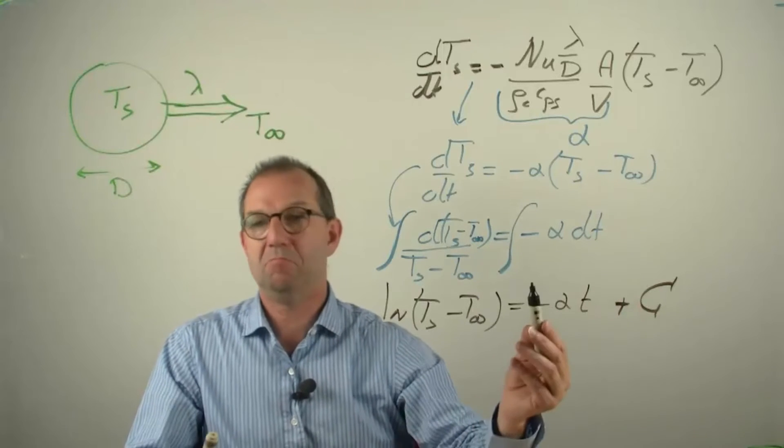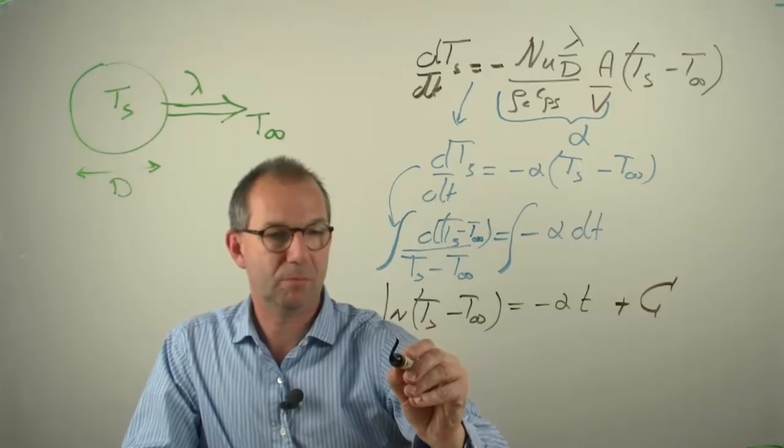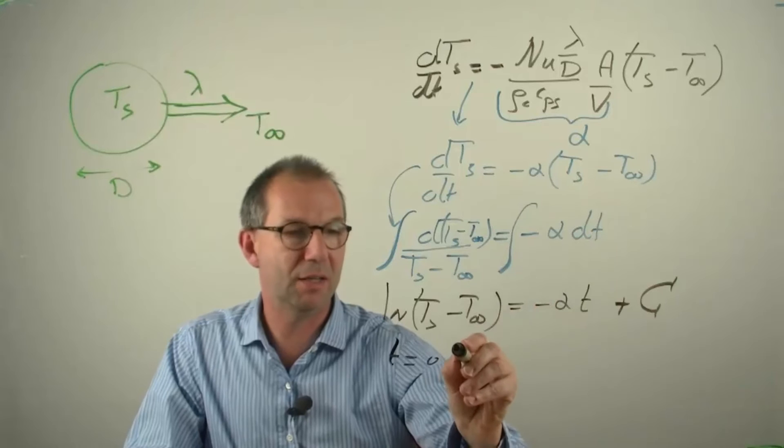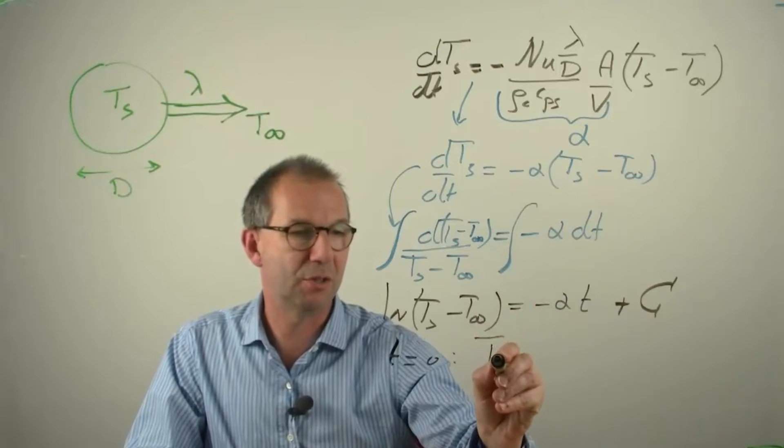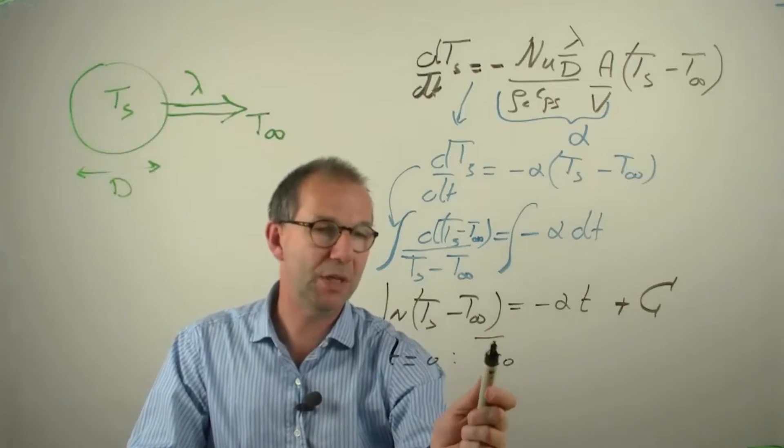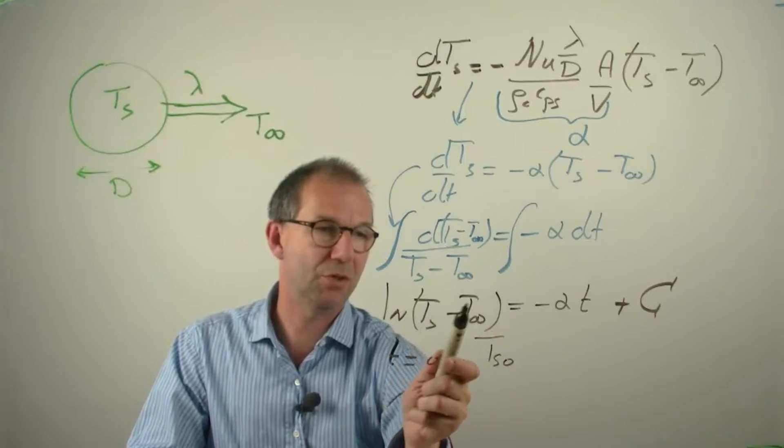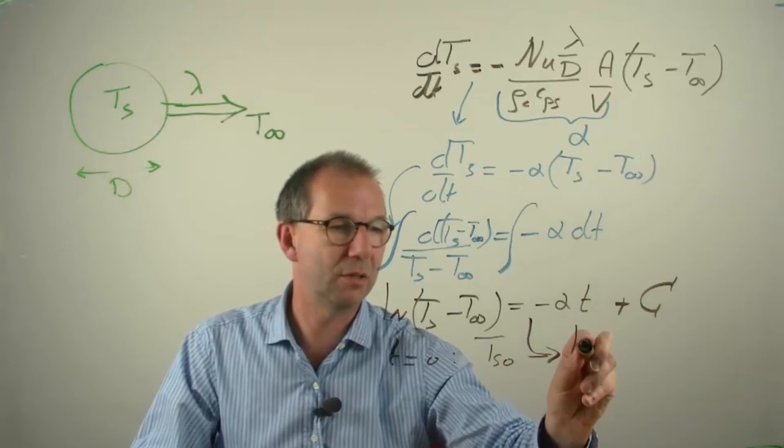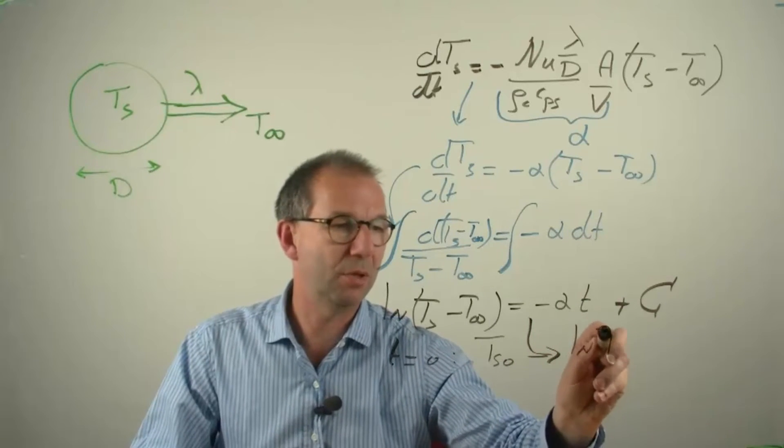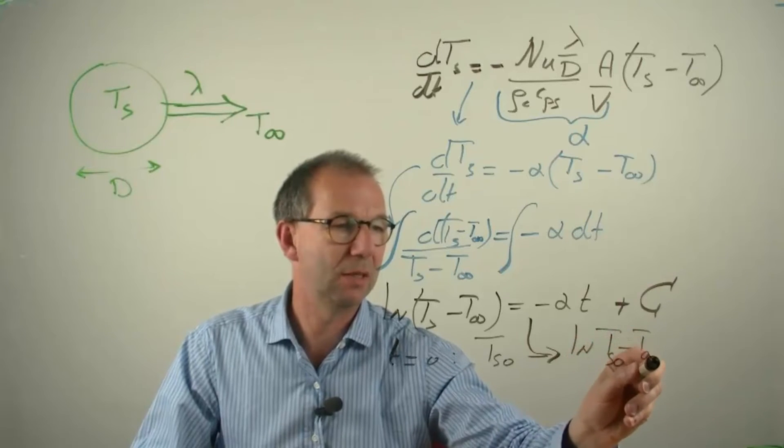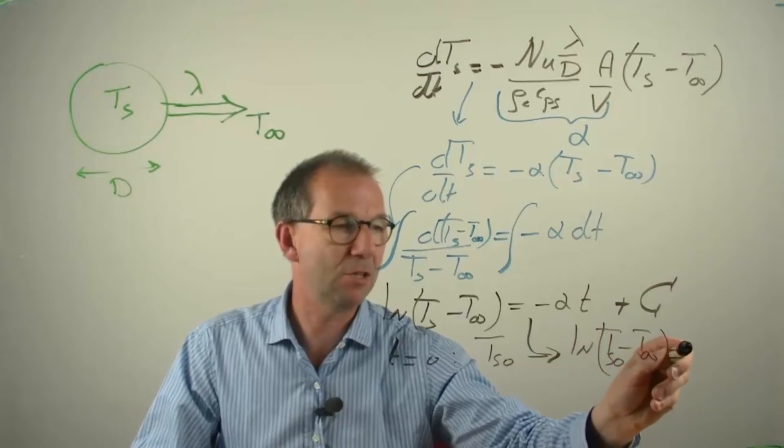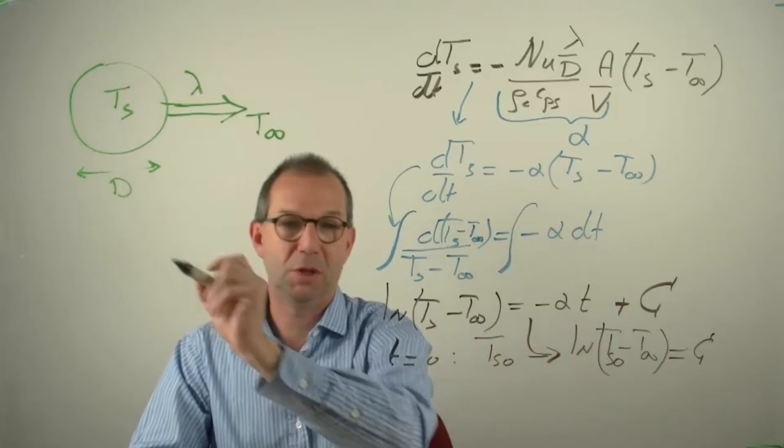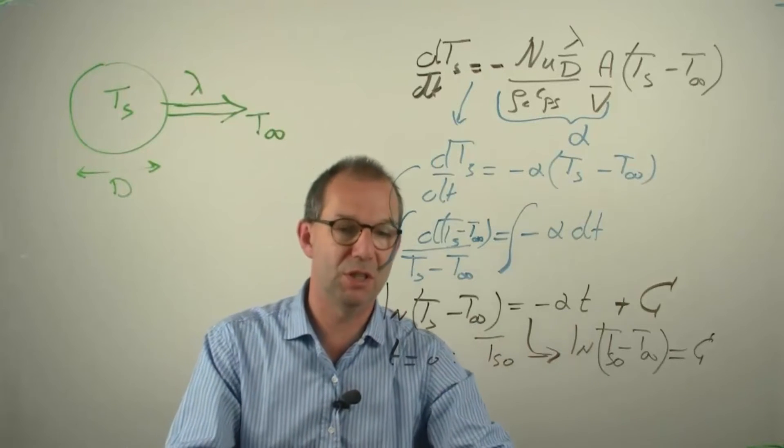How can I find it? Initial conditions. The sphere starts cooling at T equals zero. I start my clock at that point and it had then a temperature Ts0. If we put this in, then here Ts0 appears, here a zero appears. So combining these two gives you the very quick and simple answer of what this constant is. As the logarithm of the starting temperature difference. I can put these together on this part.